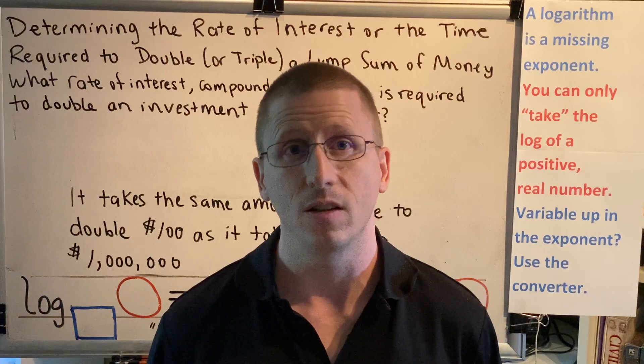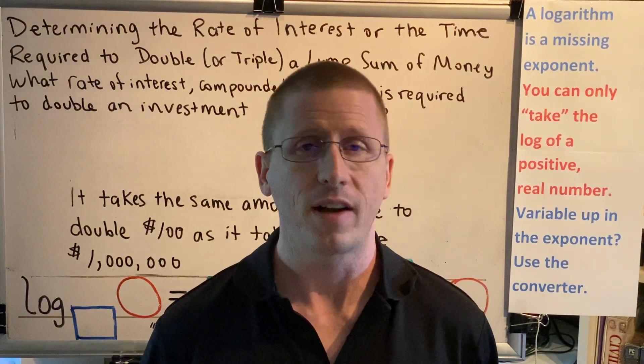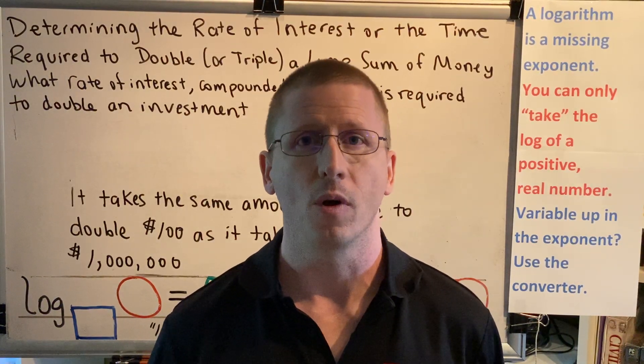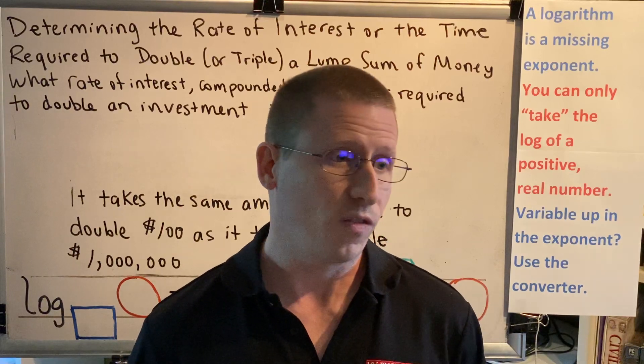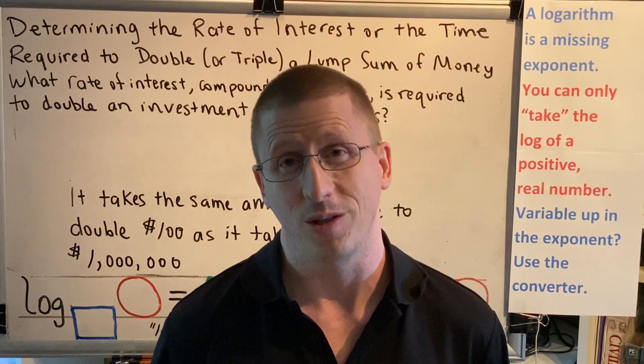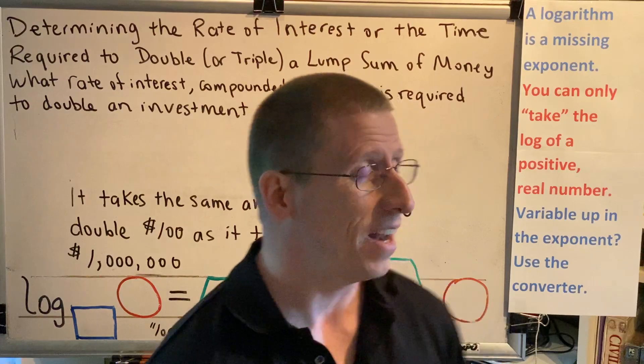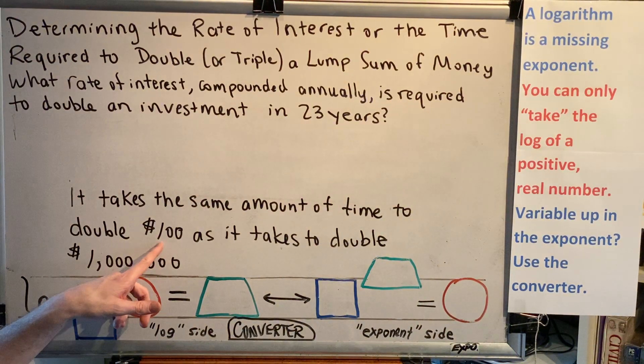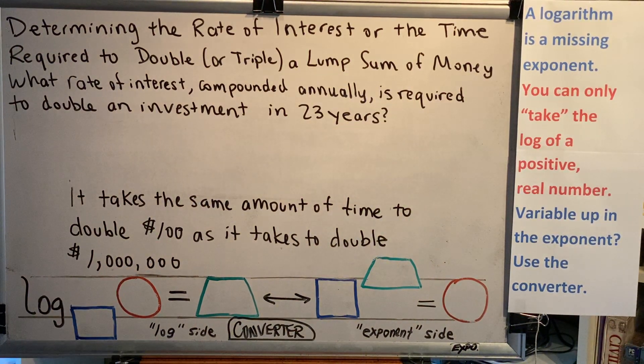Well, the effect of investing is multiplying. So if one account gets multiplied by two, and the other account is being multiplied by two because they're the same account, then naturally it takes the same amount of time to double $100 as it takes to double a million dollars.